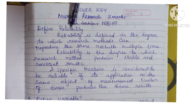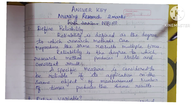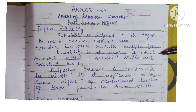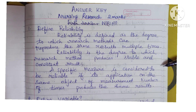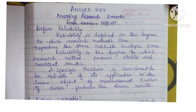First question: define reliability. Reliability is defined as the degree to which research methods can reproduce the same results multiple times. Reliability is the degree to which a research method produces stable and consistent results. A specific measure is considered to be reliable if its application on the same object of measurement a number of times produces the same results.